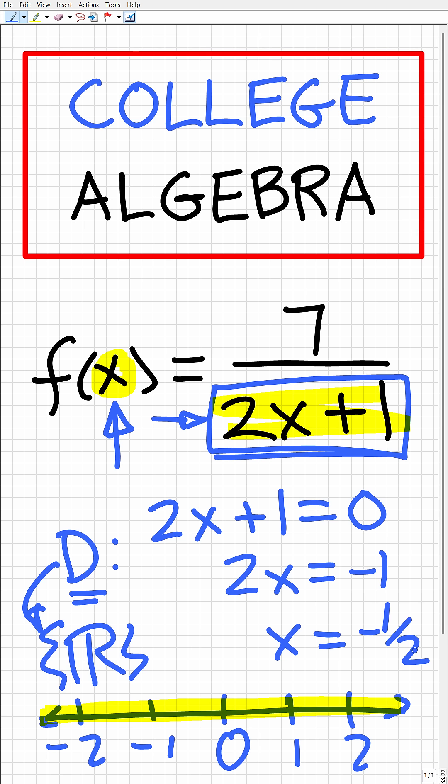All right, so when x = -1/2, 2x + 1 = 0. So x = -1/2 cannot be plugged into this function here because it would cause a zero down in the denominator.